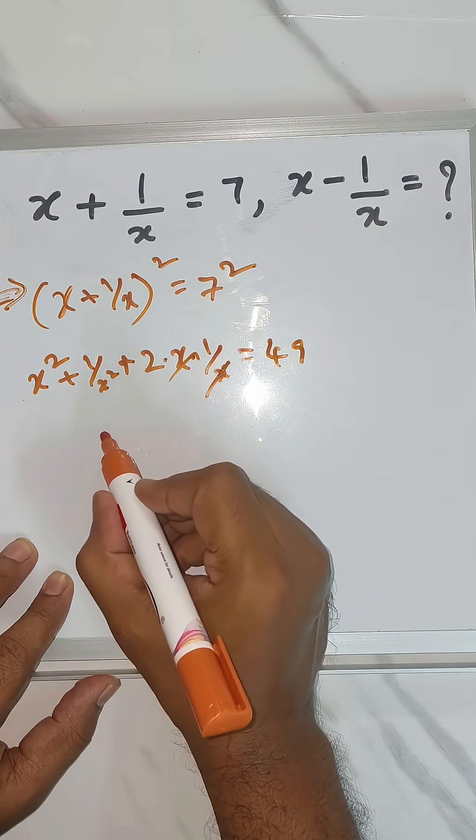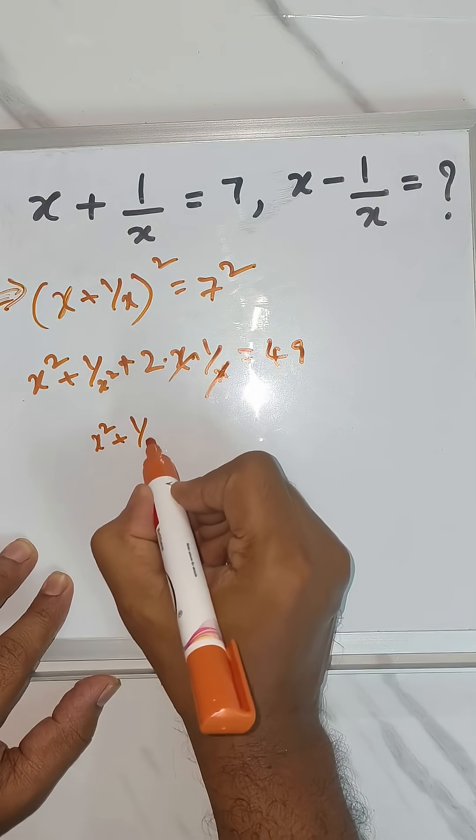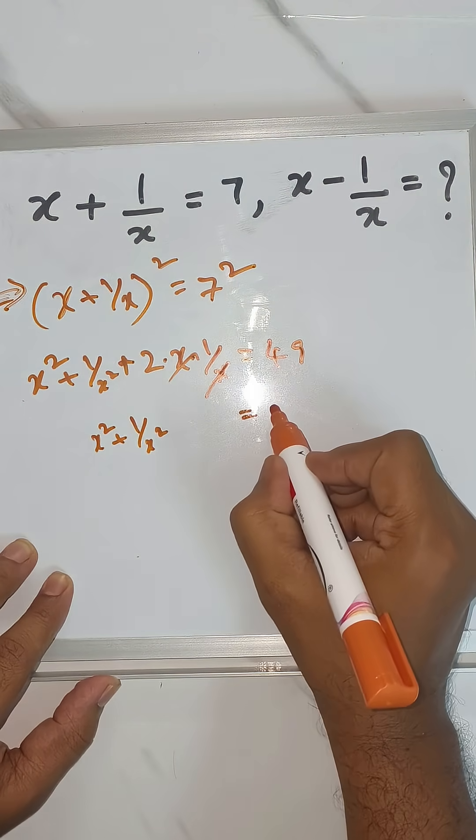So we'll just move this 2 over here. So x square plus 1/x square will become 49 minus 2, which is 47.